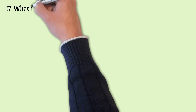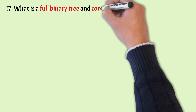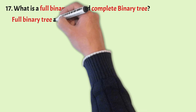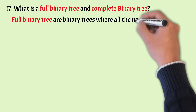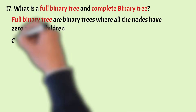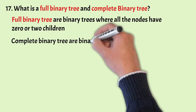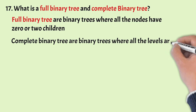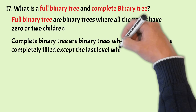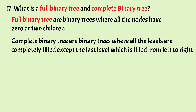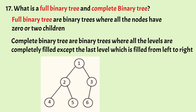What is a full binary tree and a complete binary tree? Full binary trees are binary trees where all nodes have zero or two children. Complete binary trees are binary trees where all levels are completely filled except the last level, which is filled from left to right, and it is mandatory that the last leaf node must have a right sibling. The example shown is a complete binary tree but not a full binary tree because node 3 doesn't have a right sibling.